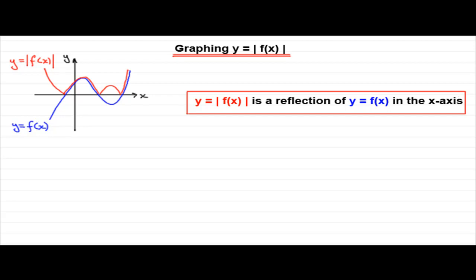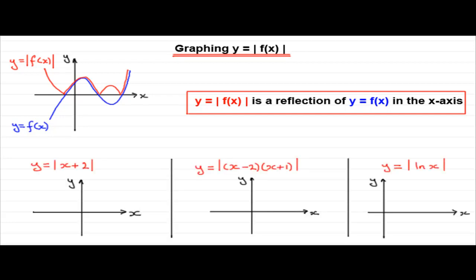I have a few examples for you to try. See if you can sketch the graph of y equals the mod of (x+2), y equals the mod of (x-2)(x+1), and finally y equals the mod of the natural log of x. It would be good to mark on any points where these curves cross the x and y axes. Pause the video if you'd like to have a go, then come back and we'll see how you got on.